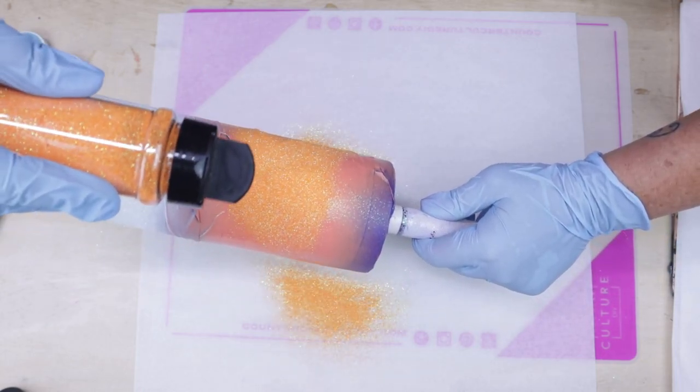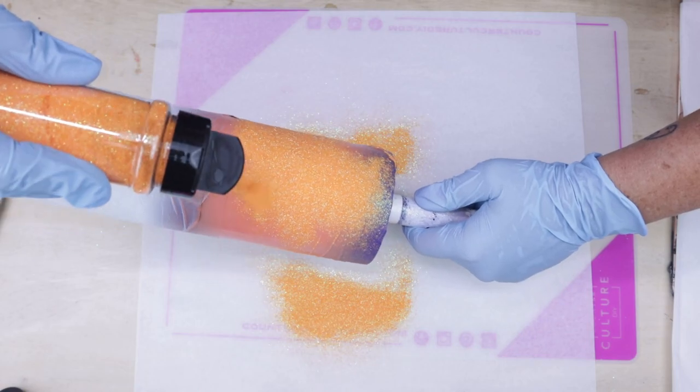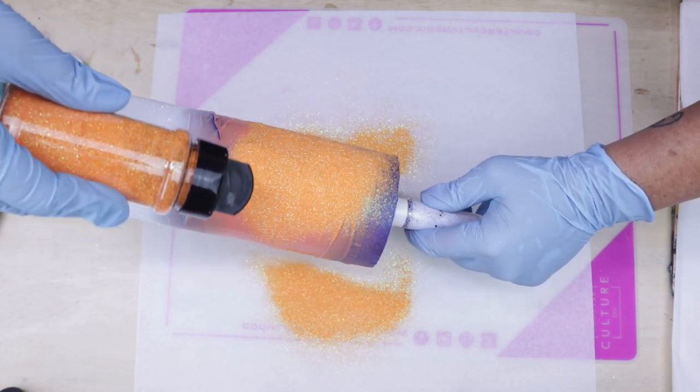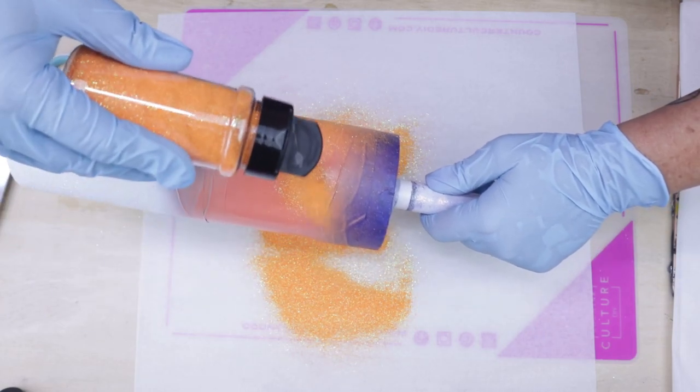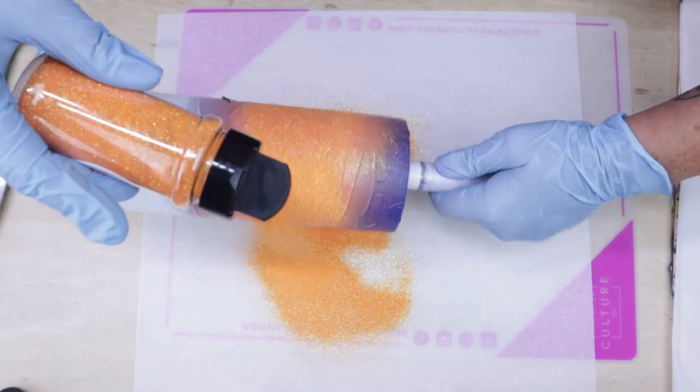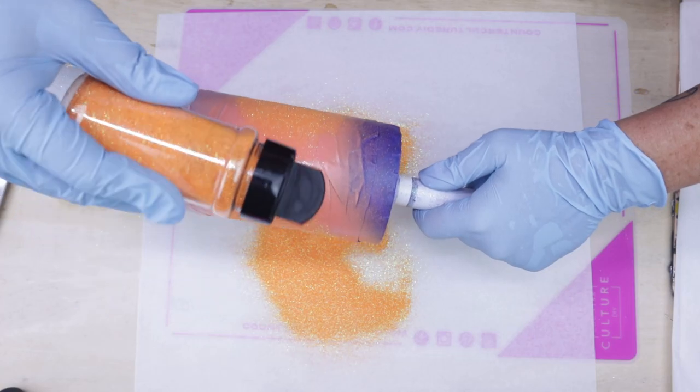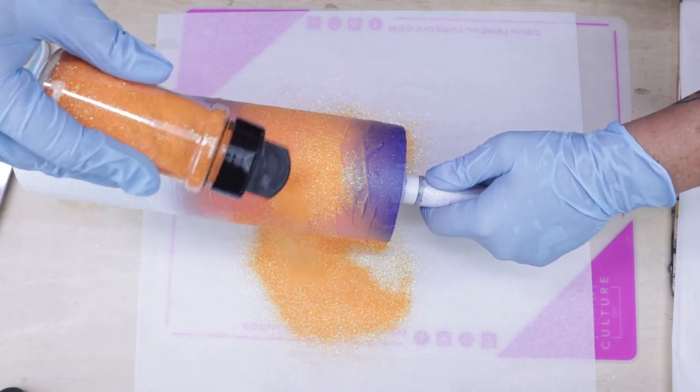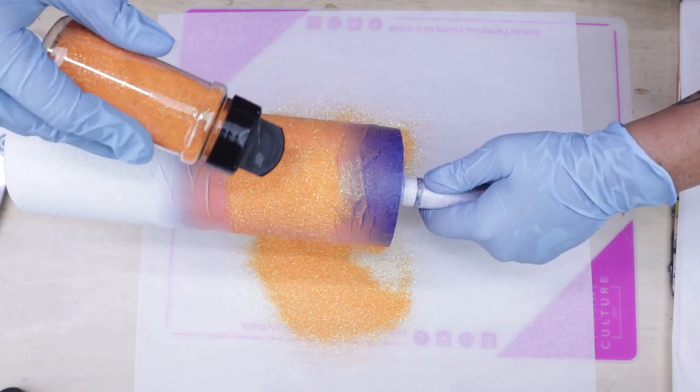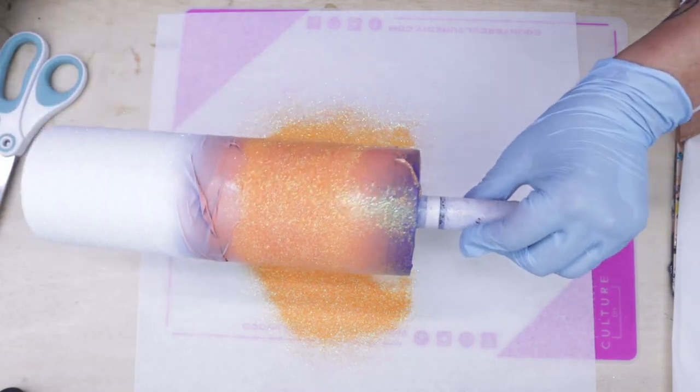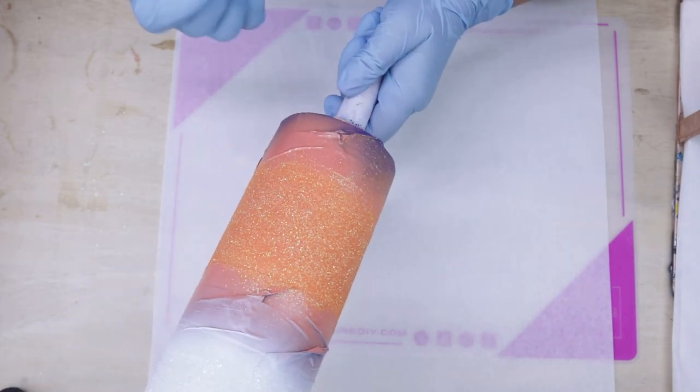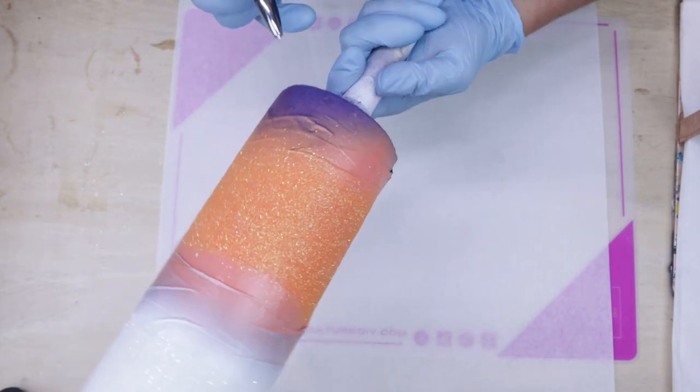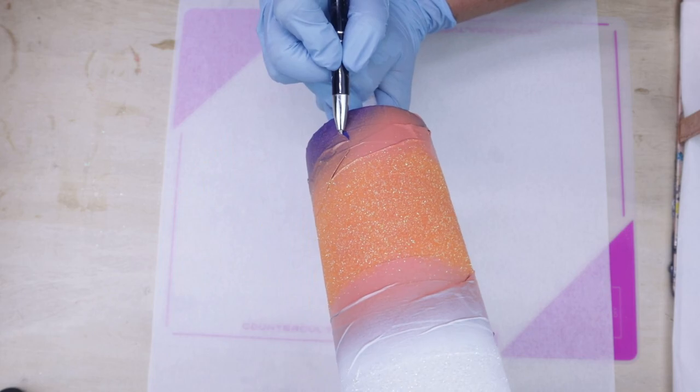And then at some point turn it downward, if that makes sense, just again to prevent this pumpkin glitter from contaminating my Girls Best Friend glitter. Looking back, I'm thinking I probably should have done the pumpkin first and then the Girls Best Friend, but thankfully I didn't have any issues with contamination and we're moving forward. If you guys are happy with your glitter application, we are now ready to go ahead and remove the tape immediately.